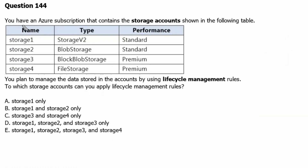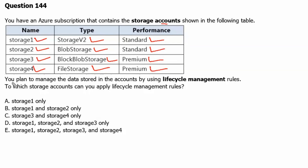Question 144. You have an Azure subscription that contains the storage accounts shown in the following table. Storage1 is a storage v2 (general purpose v2) account with standard performance. Storage2 is a blob storage type with standard performance. Storage3 is a block blob storage type with premium performance. Storage4 is a file storage type with premium performance. You plan to manage the data stored in the accounts using lifecycle management rules. To which storage accounts can you apply lifecycle management rules?